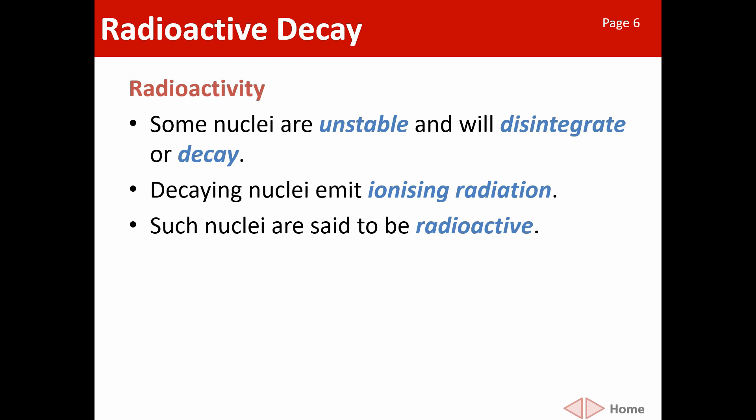Activity refers to how much radiation is coming out, or how many decays there are. Radioactive decay is both random and spontaneous — those are important key words. Random implies that you cannot tell when any particular nucleus is going to decay, nor can you make it decay by heating it or adding electric charge or chemicals. You could have two identical nuclei side by side and one might decay in the next 10 seconds while the other might not decay for another 10 years. Spontaneous means it will happen by itself — you cannot make it happen.